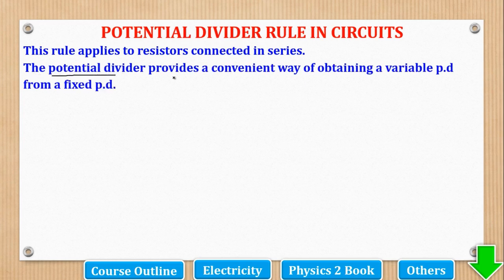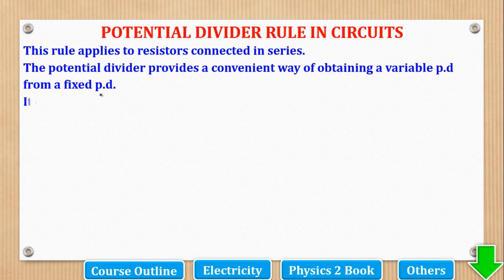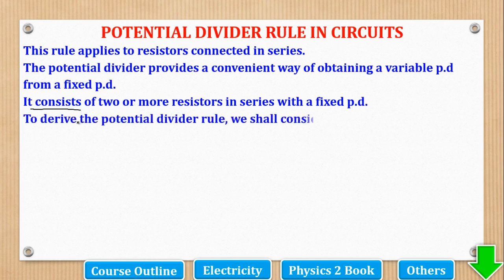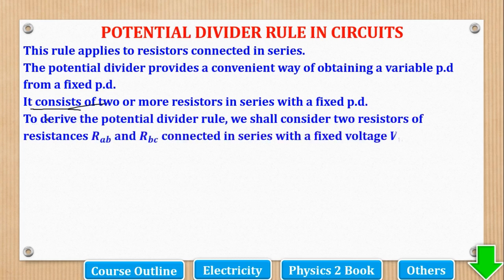The potential divider rule provides a convenient way of obtaining a variable PD from a fixed PD. It's a shortcut when dealing with calculations. We shall consider two or more resistors in series with a fixed PD, and see what this means in the diagram.